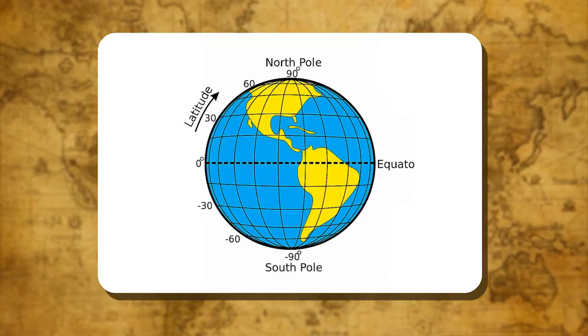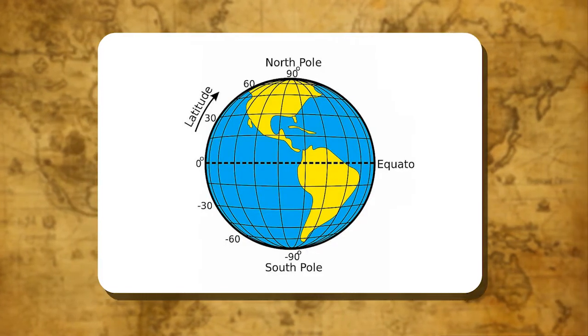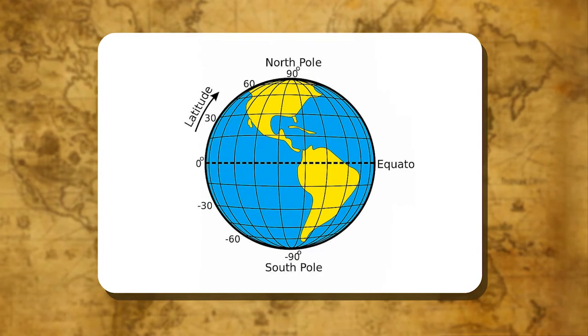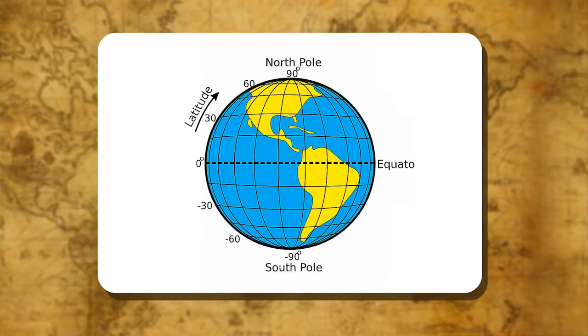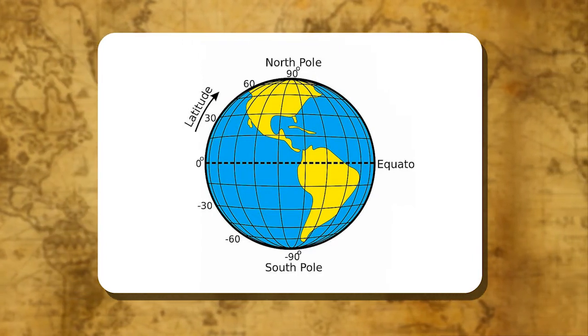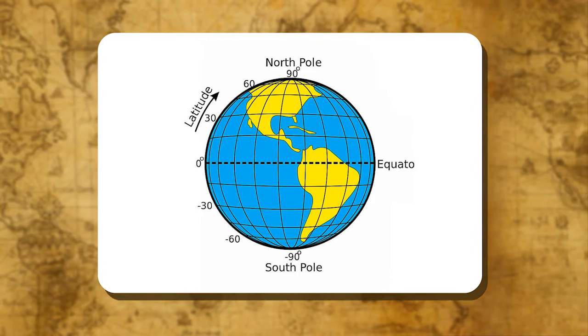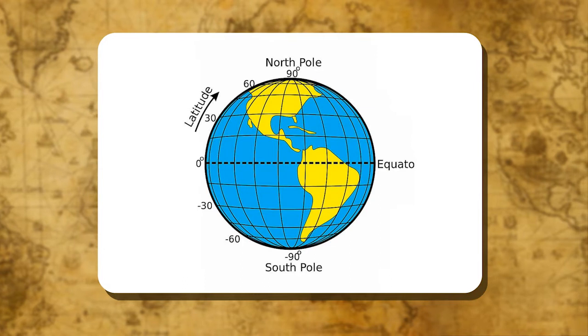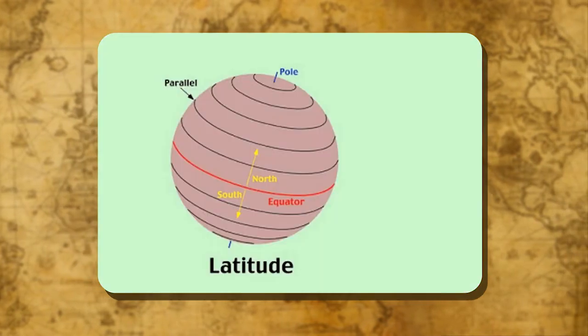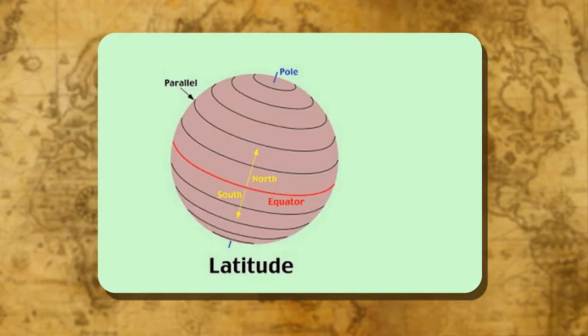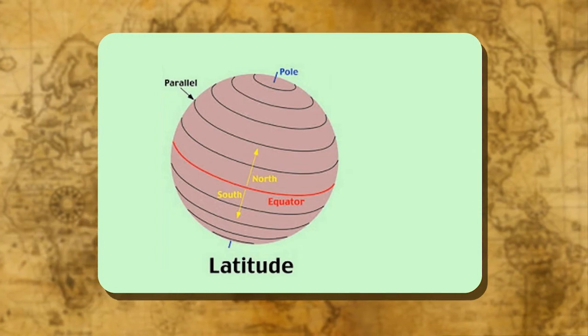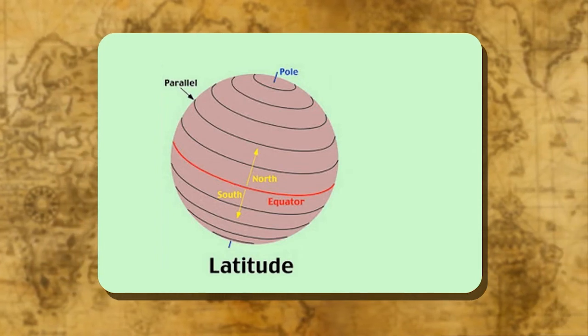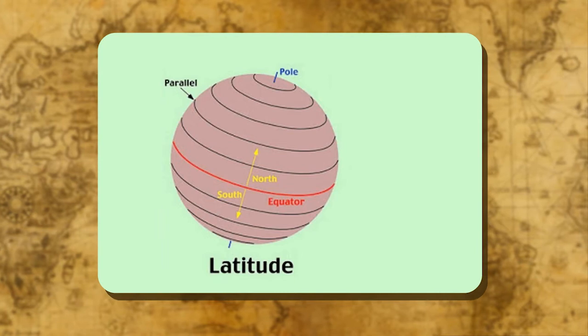A latitude is the angular distance of a given point from the equator. These lines of latitude are drawn around the earth parallel to the equator in circles which grow smaller and smaller from the equator to the poles. The circle is the largest at the equator. The equator is the greatest circle on the earth. But at the poles, it is merely a point.